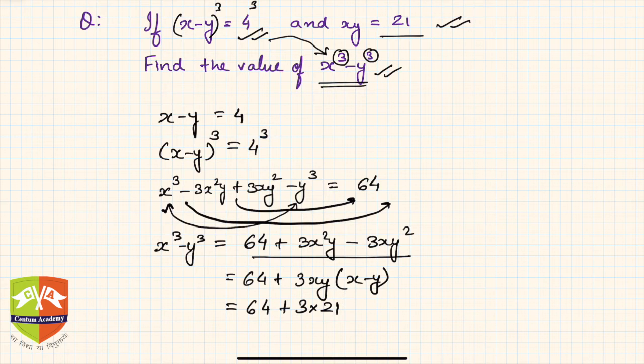xy was given as 21 and x minus y again I can use as 4. Hence the value should be 64 plus 12 times 21 is 252.